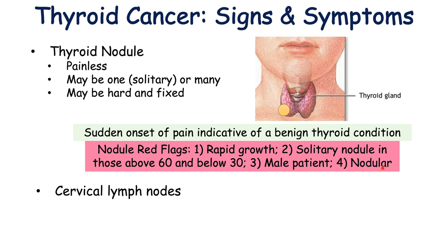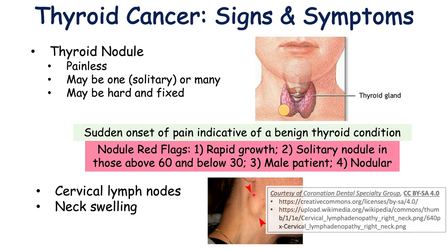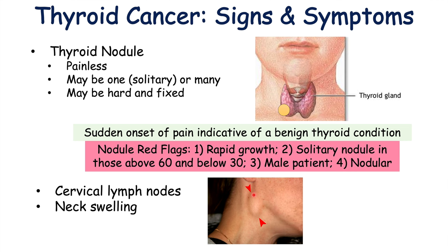Other signs and symptoms of thyroid cancer include cervical lymphadenopathy with swollen, tender lymph nodes in the neck. There can be neck swelling as well, seen more commonly in anaplastic thyroid carcinoma, which grows rapidly. As that thyroid mass grows, it may start to impinge on surrounding structures including the vocal cords and the recurrent laryngeal nerve, leading to voice hoarseness.